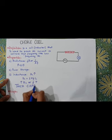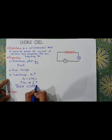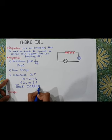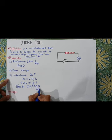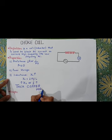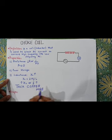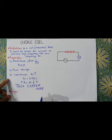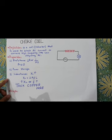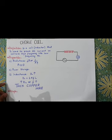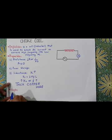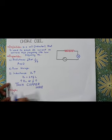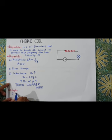We use an ideal material, which is a thick copper wire. A thick copper wire is the ideal material used to make a choke coil, which makes this aspect work well.